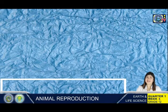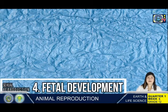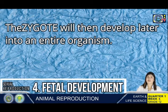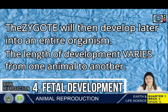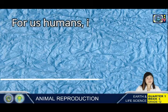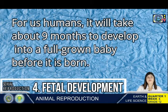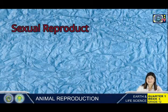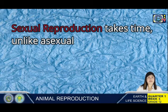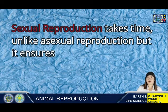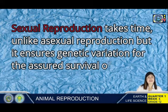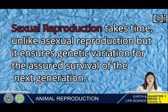For the last stage — fetal development — the zygote will develop into an entire organism. The length of development varies from one animal to another. For humans, it takes about 9 months to develop into a full-grown baby before birth. Sexual reproduction takes time unlike asexual reproduction, but it ensures genetic variation for the assured survival of the next generation.